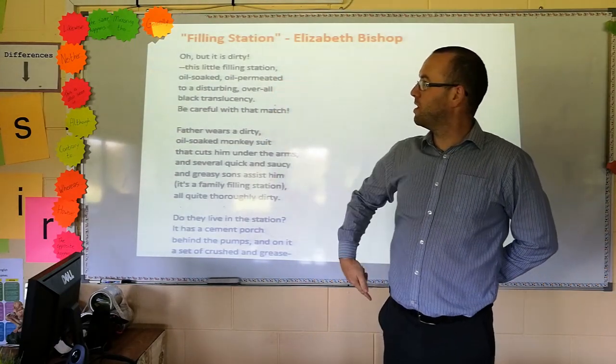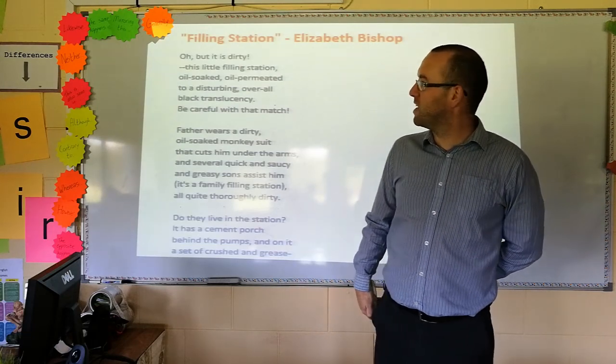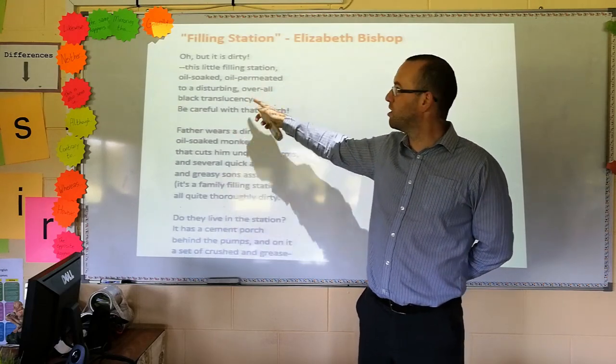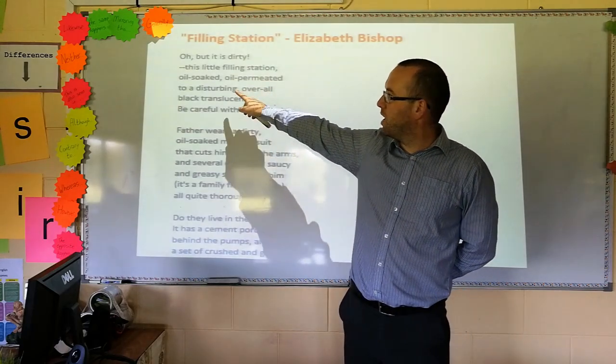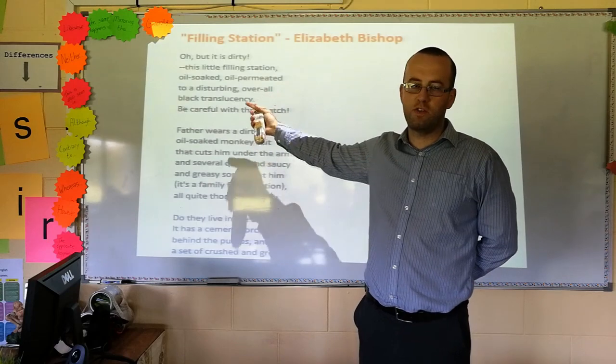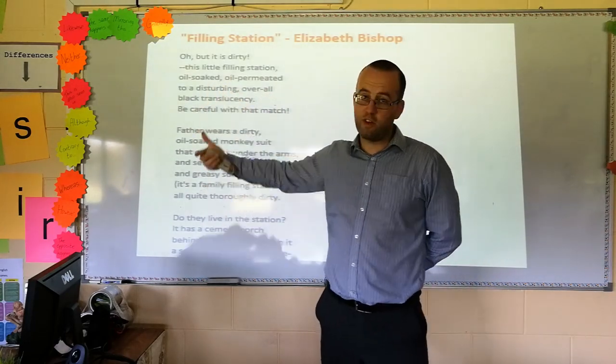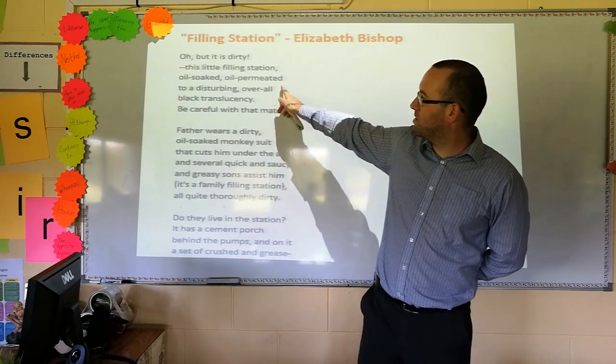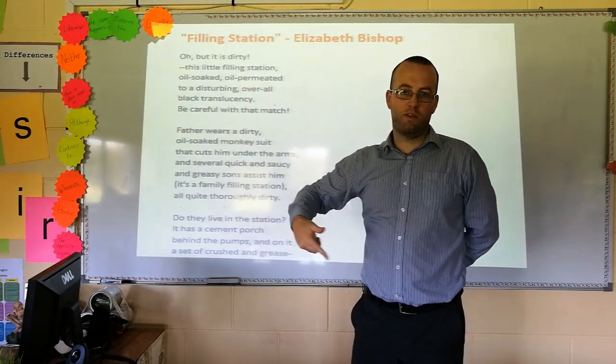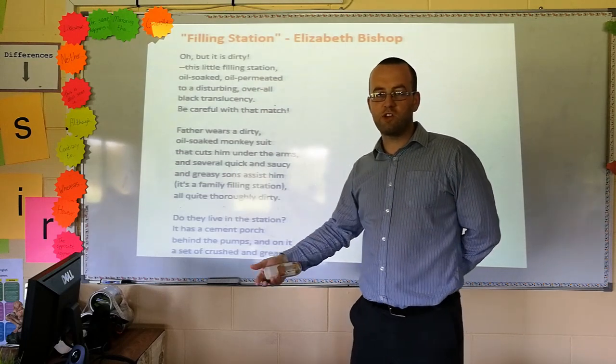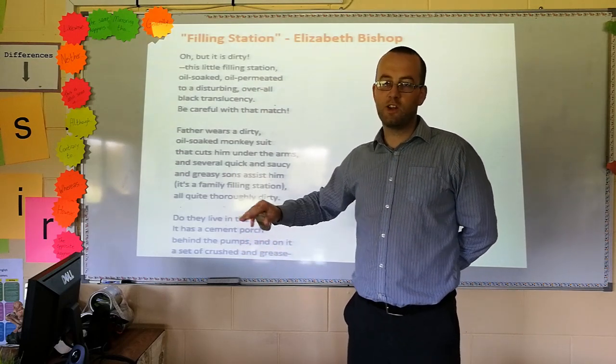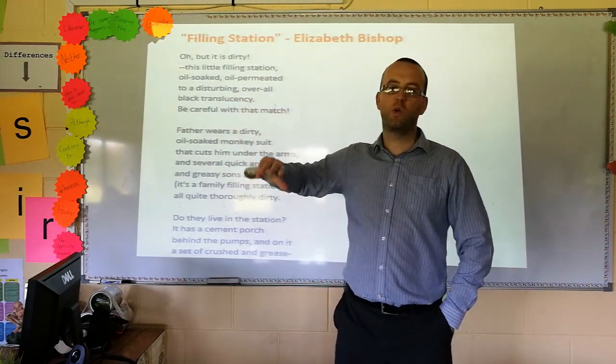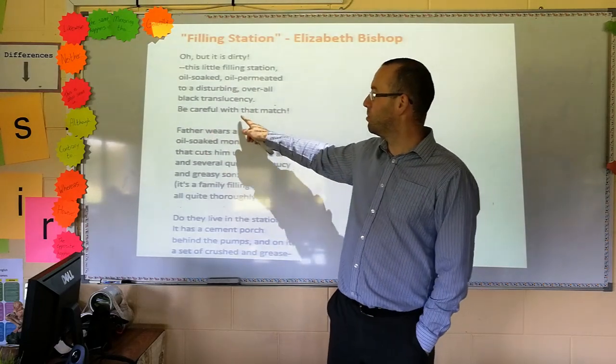So it starts off by going, oh, but it is dirty, this little filling station. A filling station, of course, might be an Americanism. Here in Ireland, we'd call it a petrol station. Oil soaked, oil permeated. See, the word oil is repeated twice there to emphasize how oily and how dirty this place is. It's soaked and it's permeated. Permeated means it goes all the way through. So it's not just dirty on the surface. This place is filthy the whole way through. And it's oil permeated to a disturbing overall black translucency. The whole place is manky. Be careful with that match.